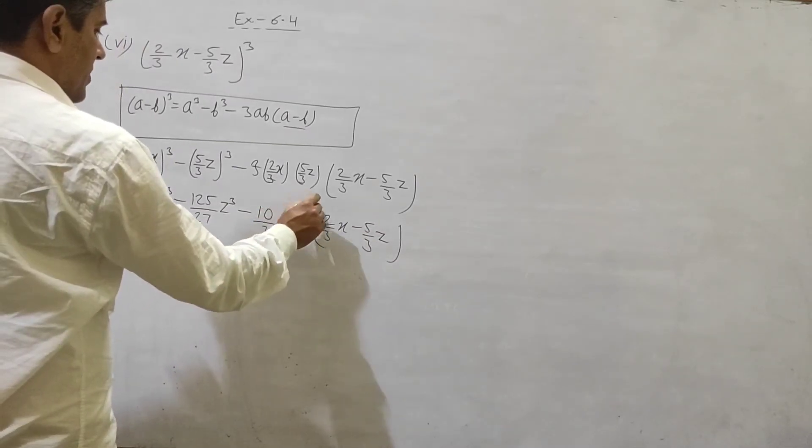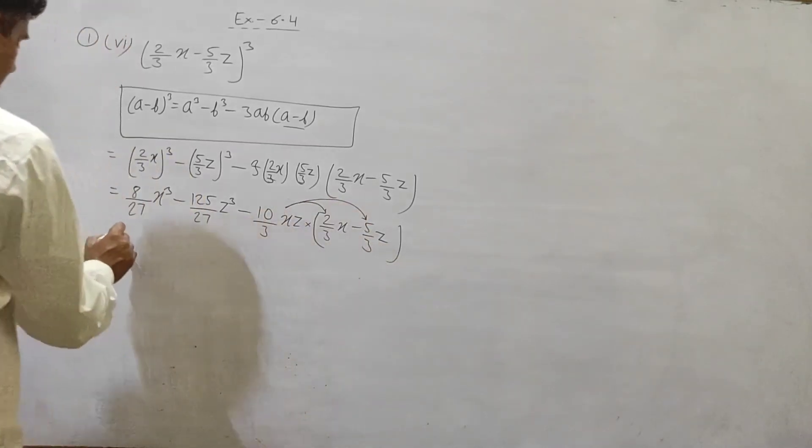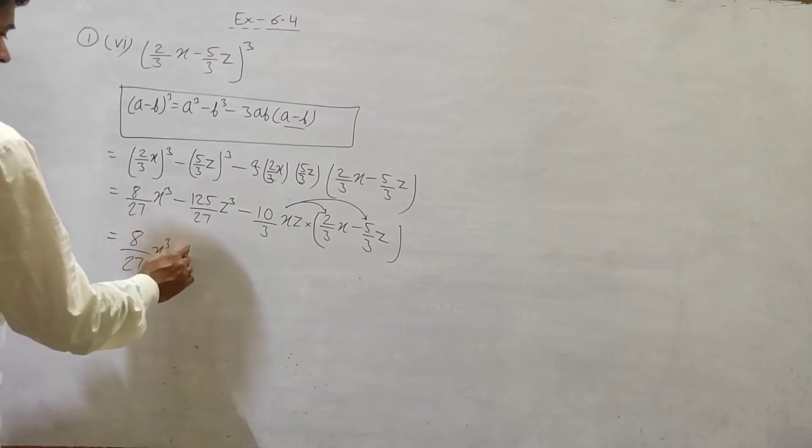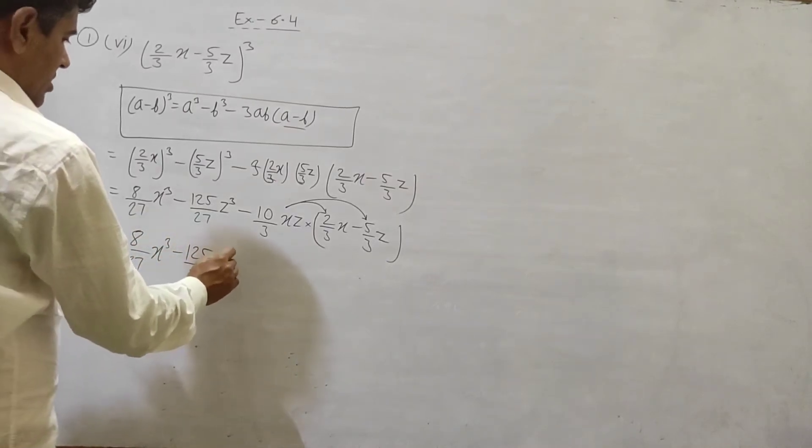Ye multiply karna hai. First thisse multiply karo ge ho ge, or phir thisse karenge. 8 by 27 x cube minus 125 by 27 z cube minus.